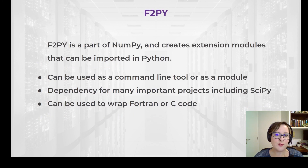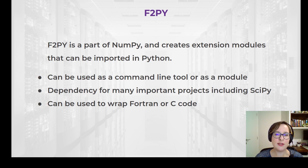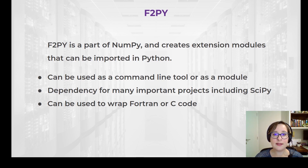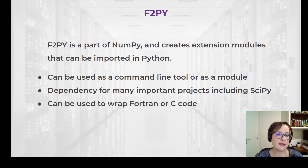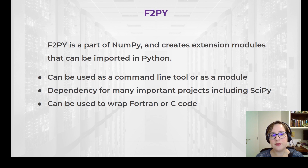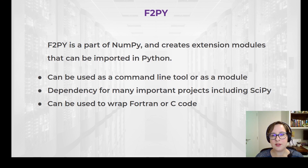So, what is F2Py? F2Py started as an attempt to glue fast Fortran code and flexible Python code, and enable high-level features such as interactivity and plotting to existing research code written in Fortran. It is now a part of NumPy and works by creating extension modules that can be imported in Python as regular Python modules. It can be used as a command line tool or as a module. It is a dependency for many important projects in the SciPy ecosystem, including the SciPy library itself, and it can be used to wrap Fortran or C code into extensions for Python.